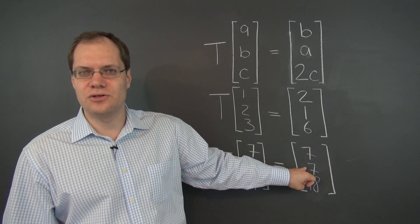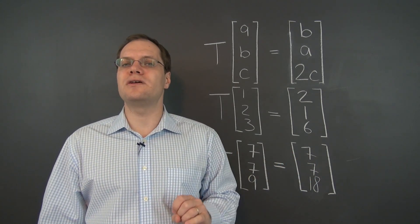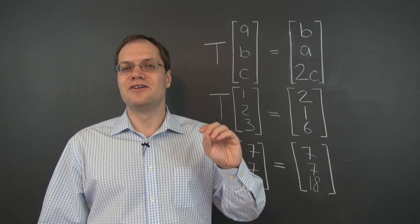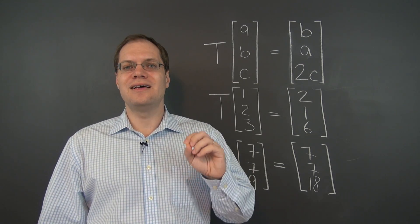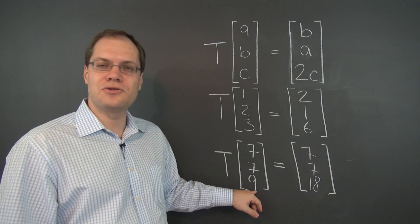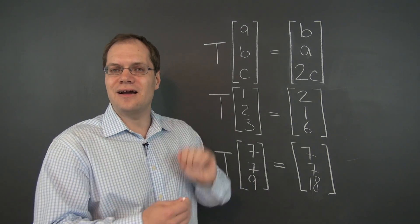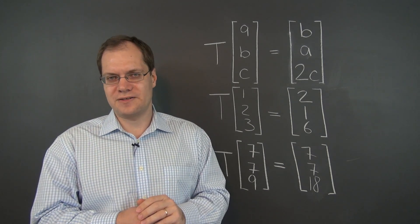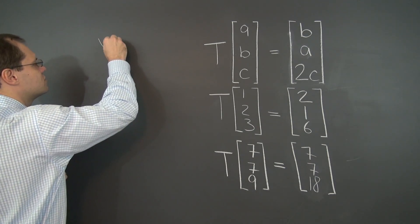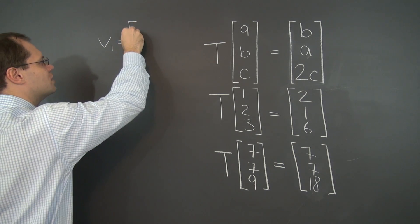But if the 7s were 0s, then it would certainly work. So the first good guess for an eigenvector is 0, 0, 9. But remember that out of the entire eigenvector you just have to choose one vector. And perhaps the best one to choose is 0, 0, 1.